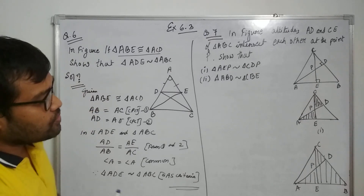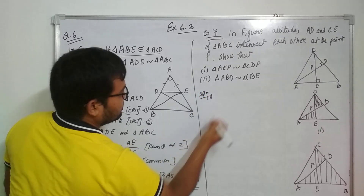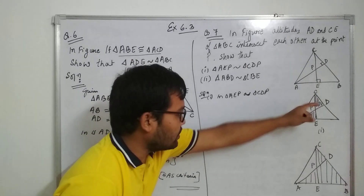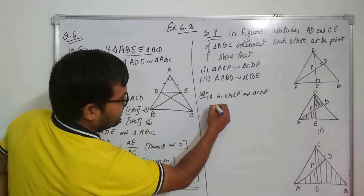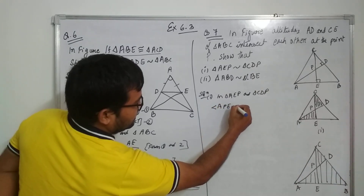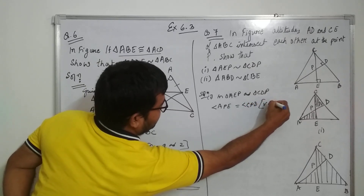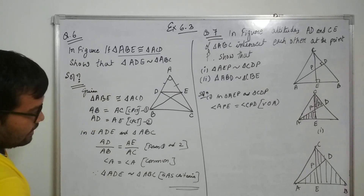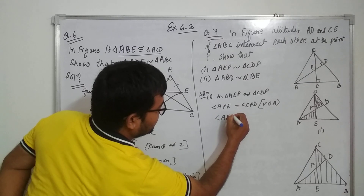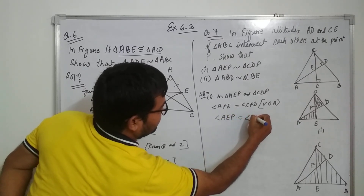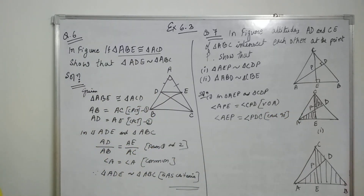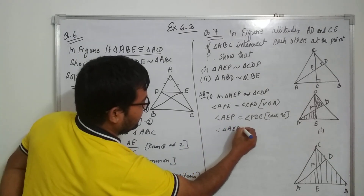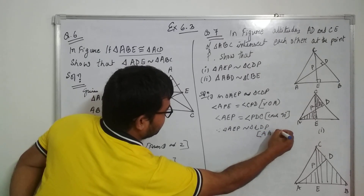In triangle AEP and triangle CDP, please observe only the stated parts. We can see angle APE equals angle CPD — this is a vertically opposite angle. Also, angle AEP equals 90 degrees and angle PDC equals 90 degrees, both being 90 degrees. Therefore, triangle AEP is similar to triangle CDP by the Angle-Angle similarity criteria — very simple.